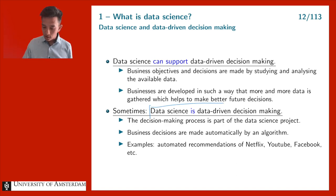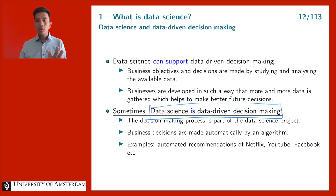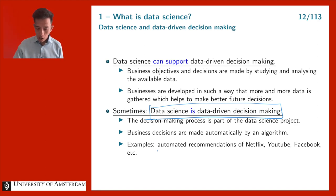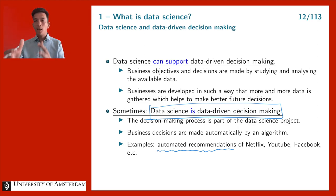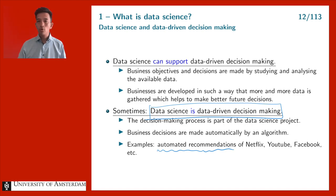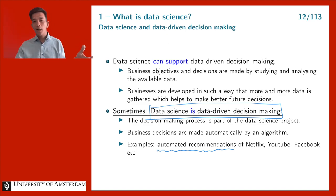Sometimes data science is the same as data-driven decision making in the sense that the result of the data science study directly becomes the decision. For example, automated recommendations on Netflix: we take your user profile and all available data, predict what movie you want to watch next, and recommend it. There is no intervention between the data science result and the actual decision.